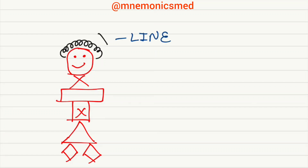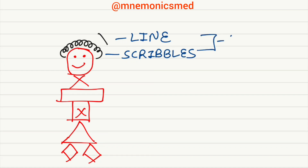Children copy lines and scribbles at the age of two years. You have to remember: children copy lines and scribbles at the age of two years.